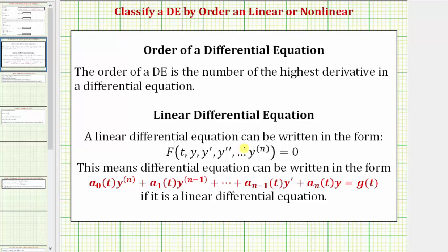A linear differential equation can be written in the form of f(t, y, y') all the way through the nth derivative of y equals zero. This means a linear differential equation can be written in this form here. We can have a function of t, where the function of t can be a constant, a function of t times y, as well as a function of t times a derivative of y. So if it fits this form, it's linear; if it doesn't, it's nonlinear.